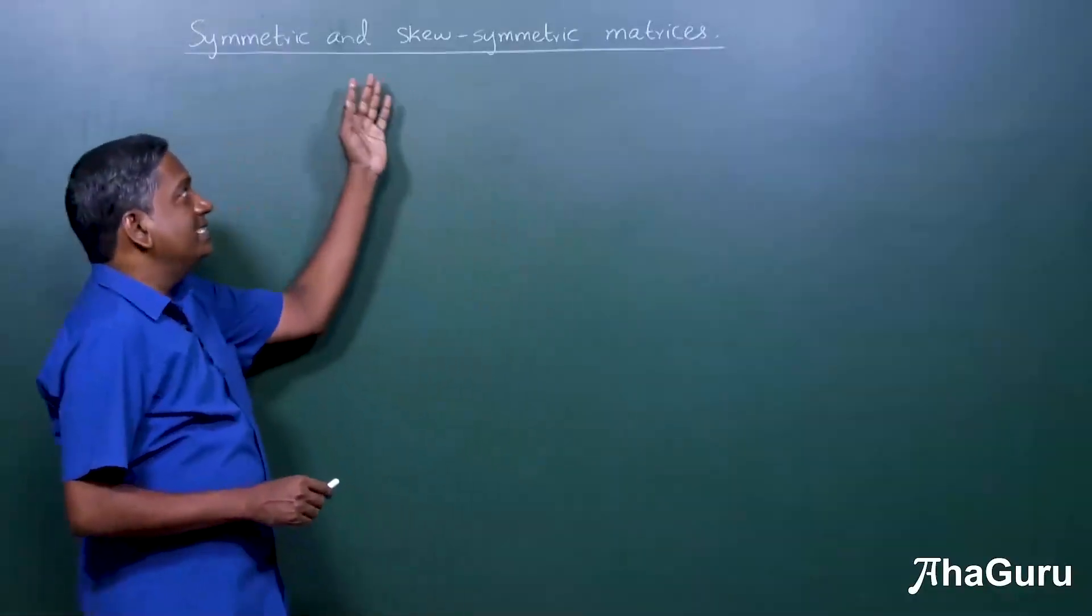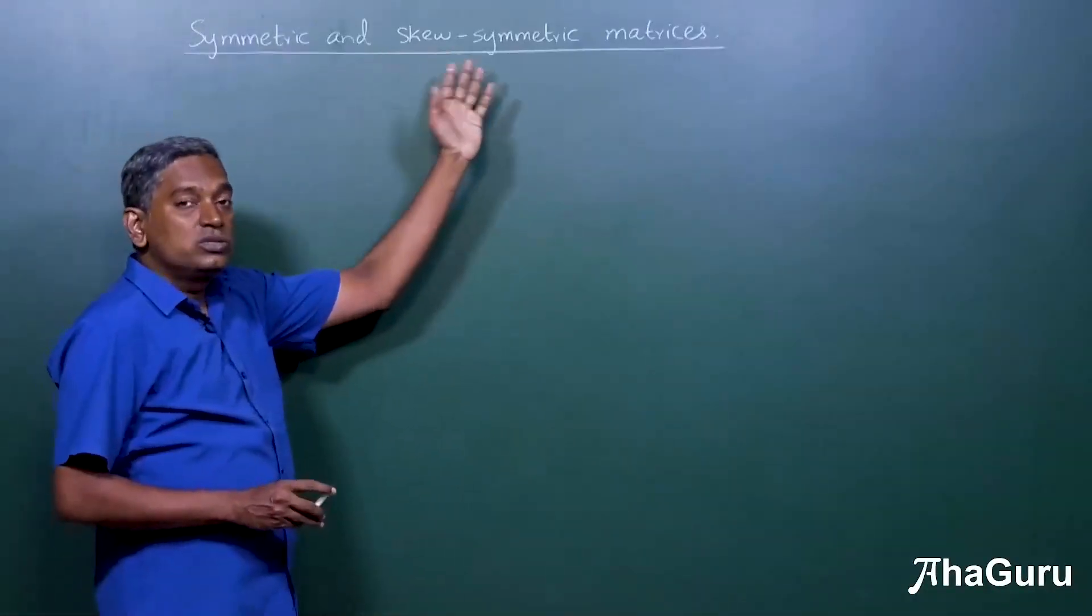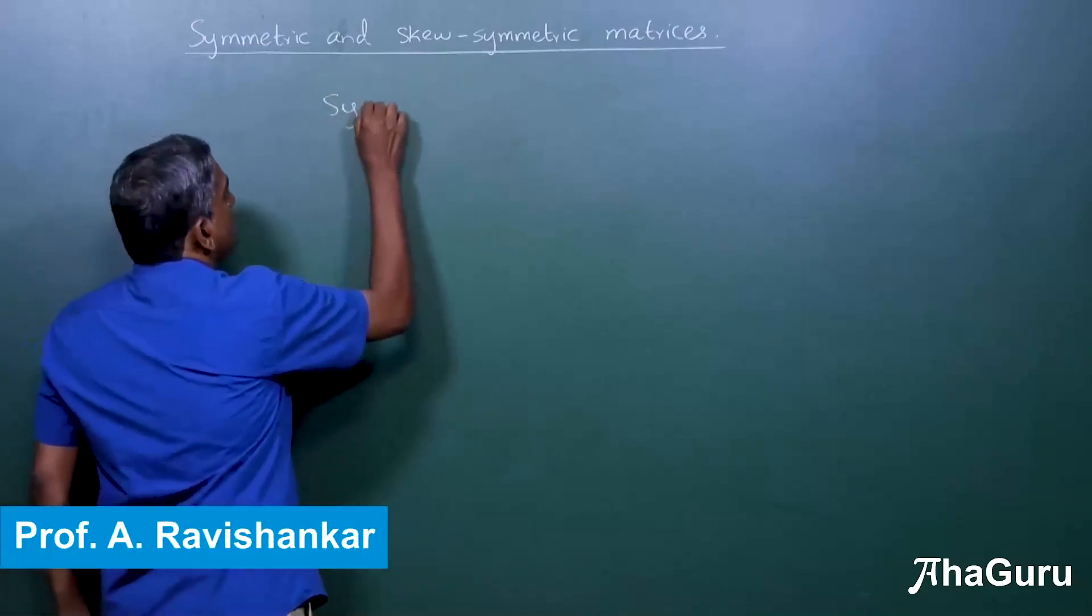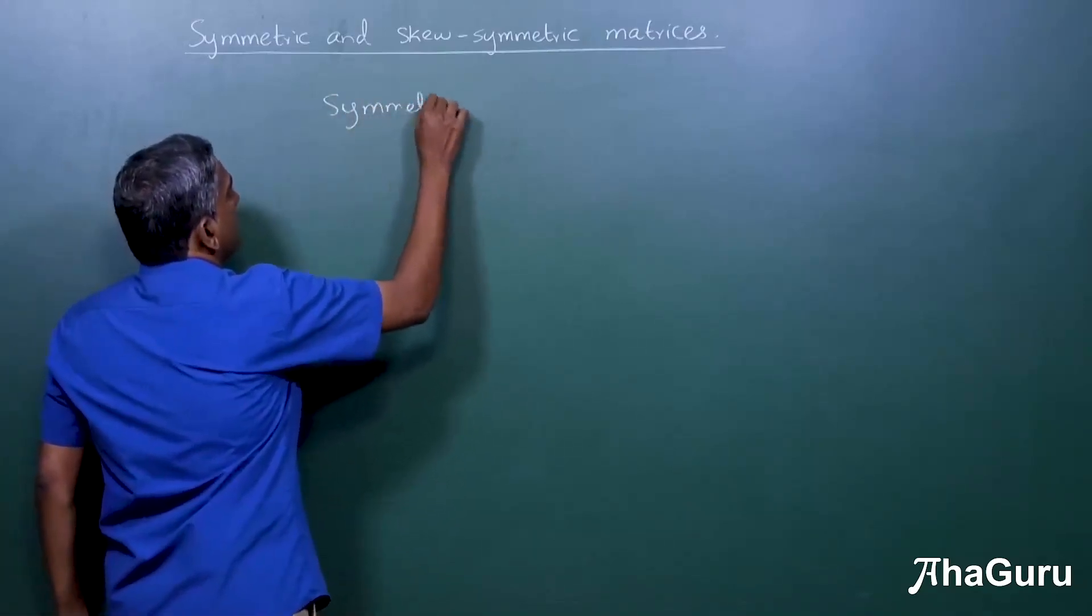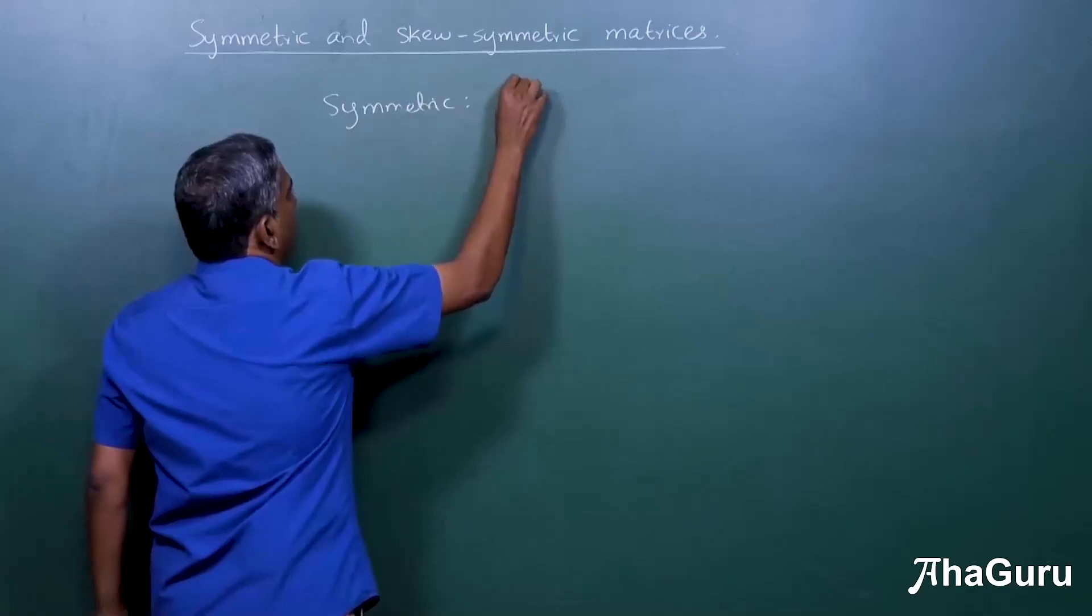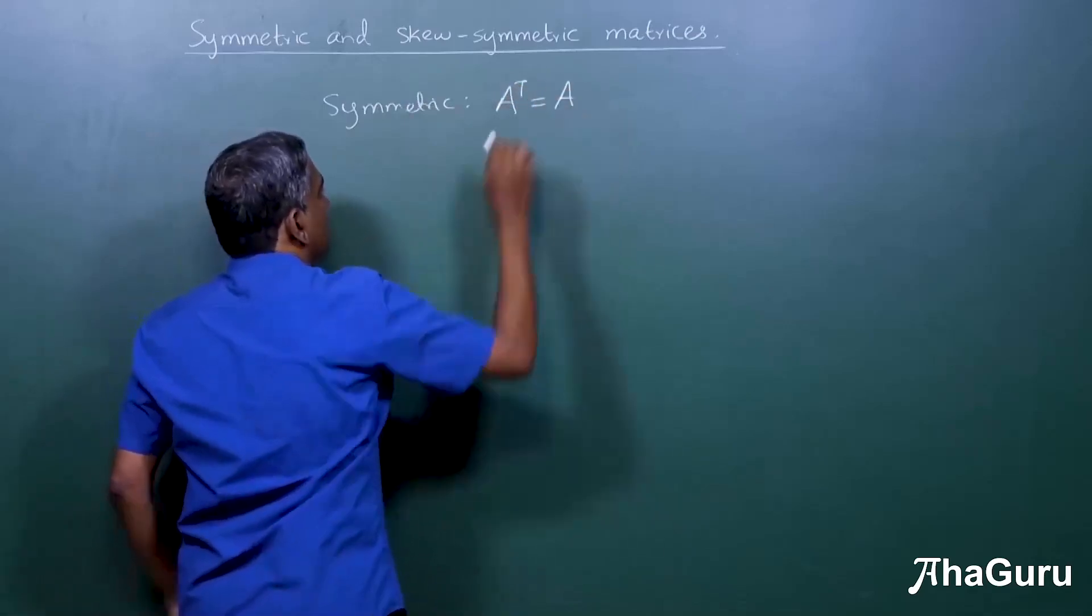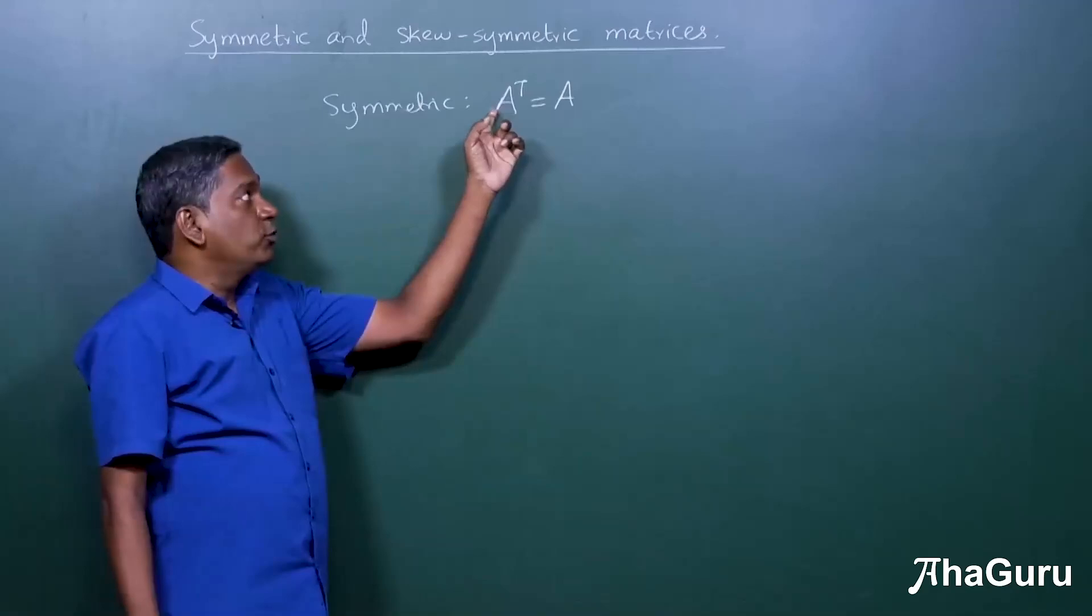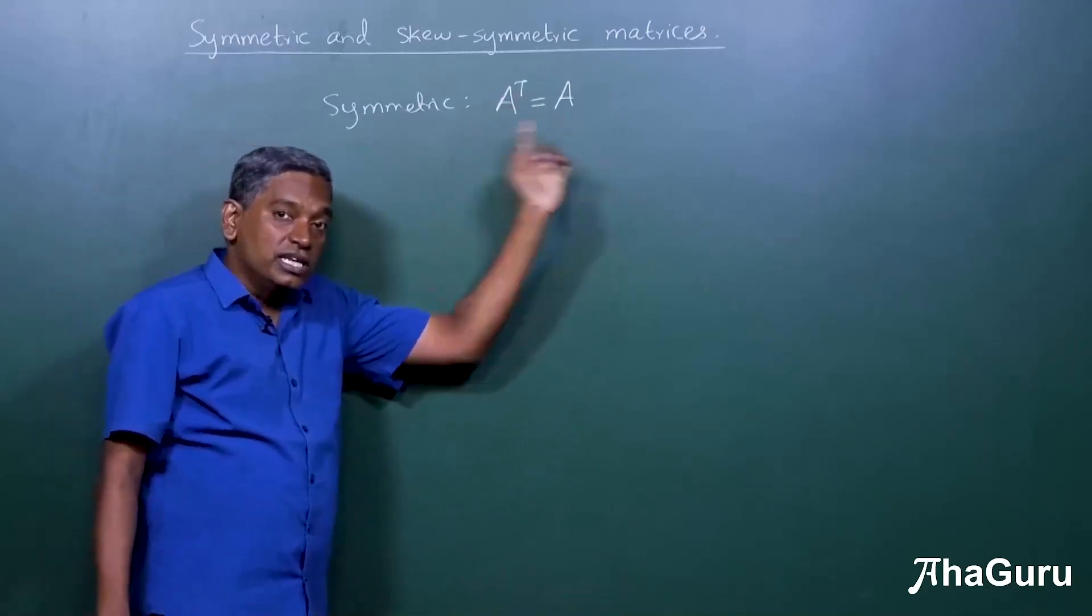Let's understand symmetric and skew-symmetric matrices. Now what is a symmetric matrix? A symmetric matrix is one where A transpose equals A. If you transpose the matrix you get the original.